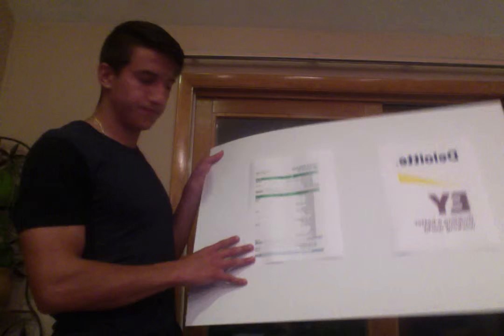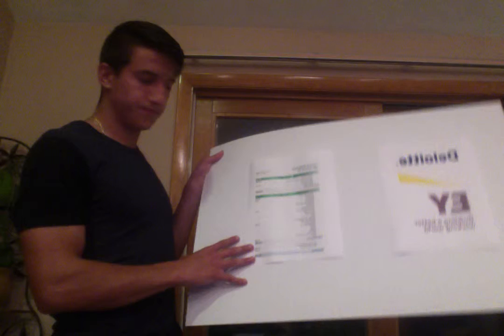With the revenues and expenses given by the business owner, the accountant will come up with one of the most simple financial statements: an income statement. An income statement shows the revenues and expenses. Expenses are subtracted from revenues to get to net income.